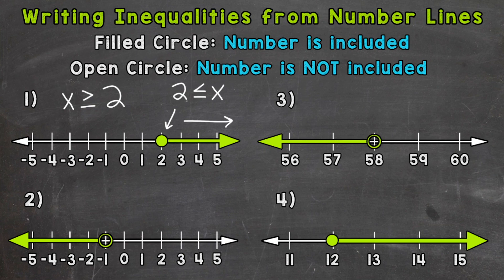On to number two, where we have an open circle above negative one, so negative one is not going to be included in our solutions. The arrow is pointing to the left, so we want all the numbers less than negative one. X is going to represent our solution, so x has to be less than negative one. Negative one is not included because of the open circle, so we do not want an 'or equal to' symbol for this inequality.